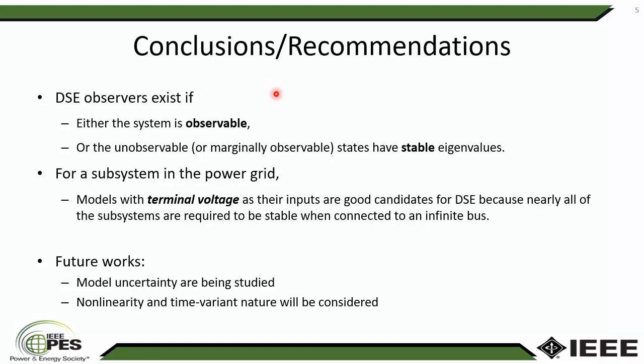Based on our study results, the following conclusions can be drawn. First, the DSE observer will exist if the system is observable. Or if the system is unobservable but the unobservable states have a stable eigenvalue, the DSE observer will also converge. For a power system, if we connect a subsystem into a power grid, the subsystem must be stable when connected to an infinite bus. Based on that, if we choose the terminal voltage of that subsystem as the input for dynamic state estimation, we can guarantee a stable subsystem model, ensuring detectability and convergence of the dynamic state estimation.